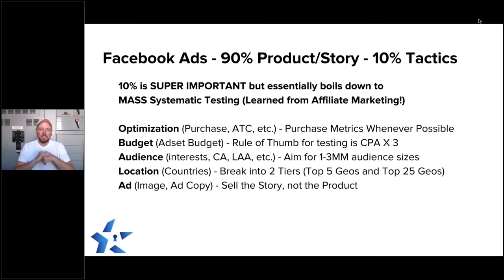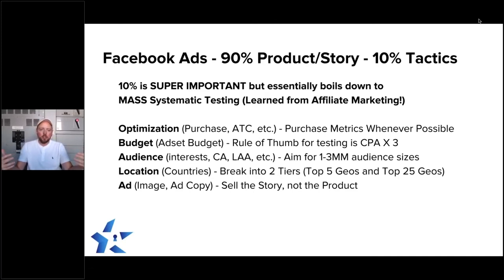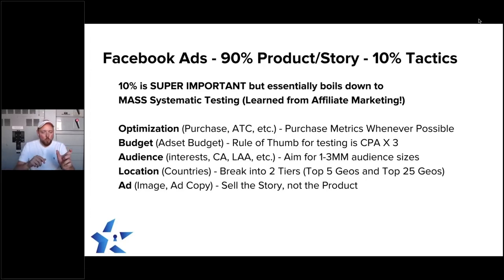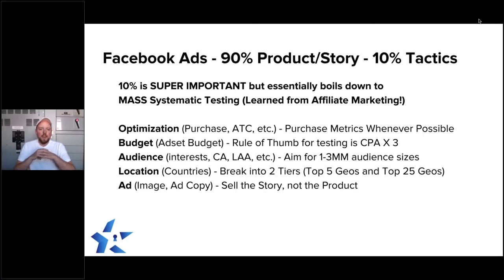You're only going to get that by doing mass systematic testing — that's what all of our lessons teach you how to do. When it comes to optimization, you want to optimize on purchase whenever possible. That's the top-line learning: whenever possible, tell the Facebook pixel when a purchase has occurred and optimize towards that. You can build up to it, since you won't be able to optimize on purchases right away, but you always want to focus on purchases.